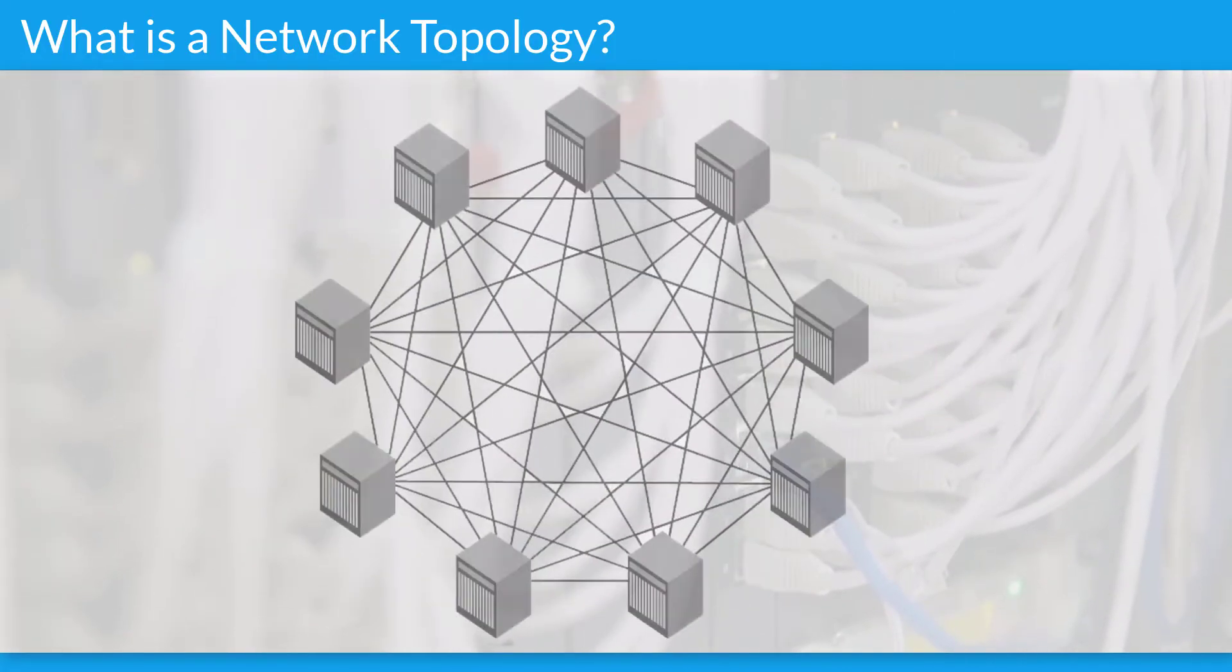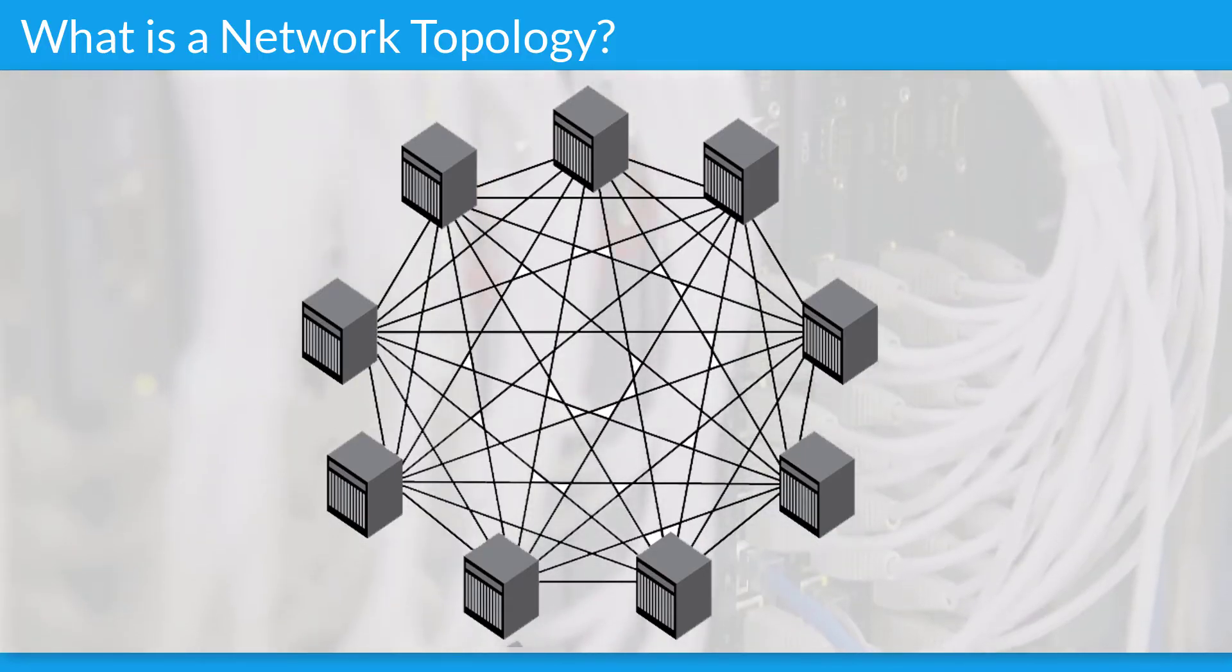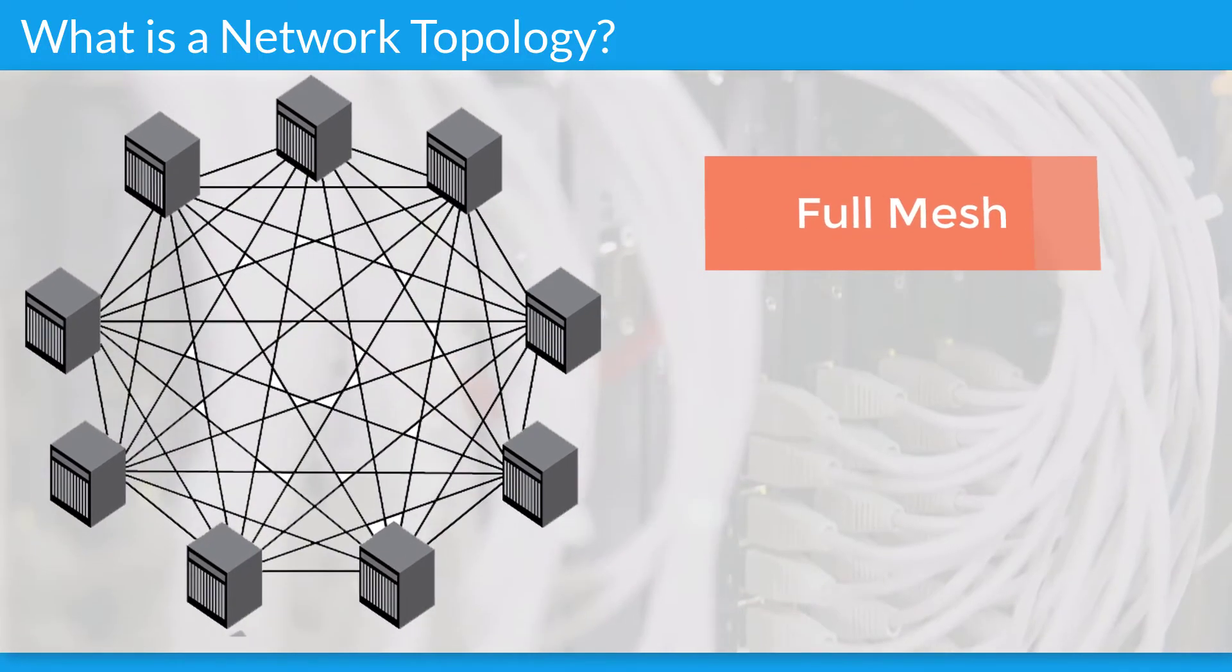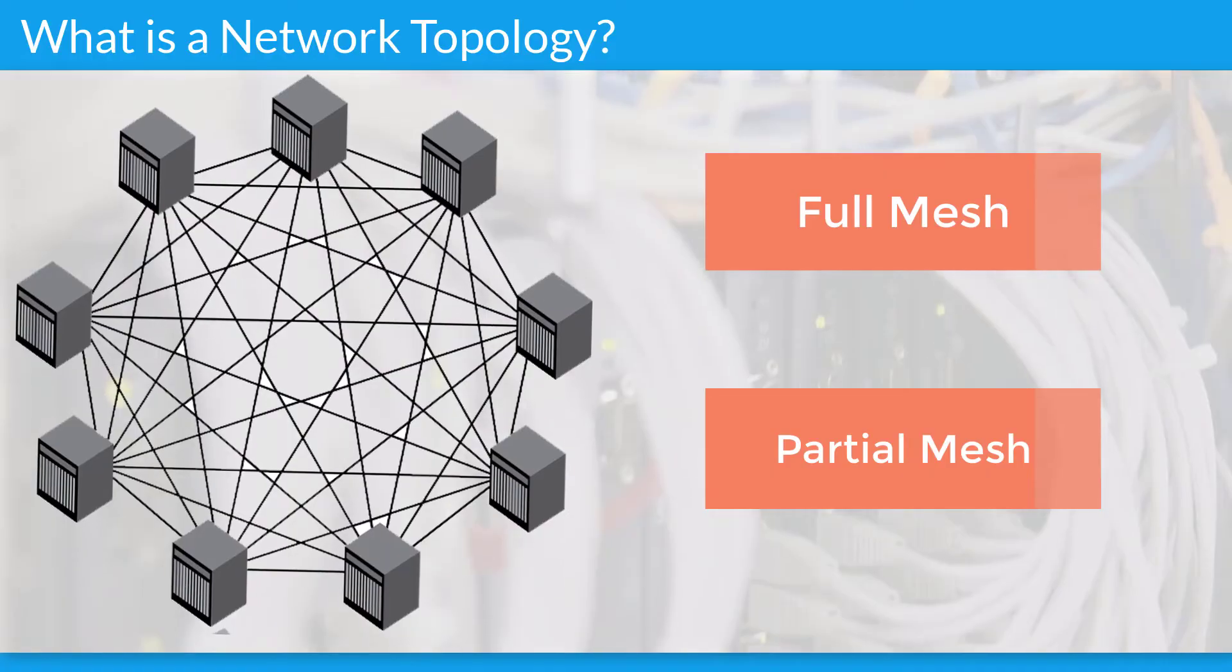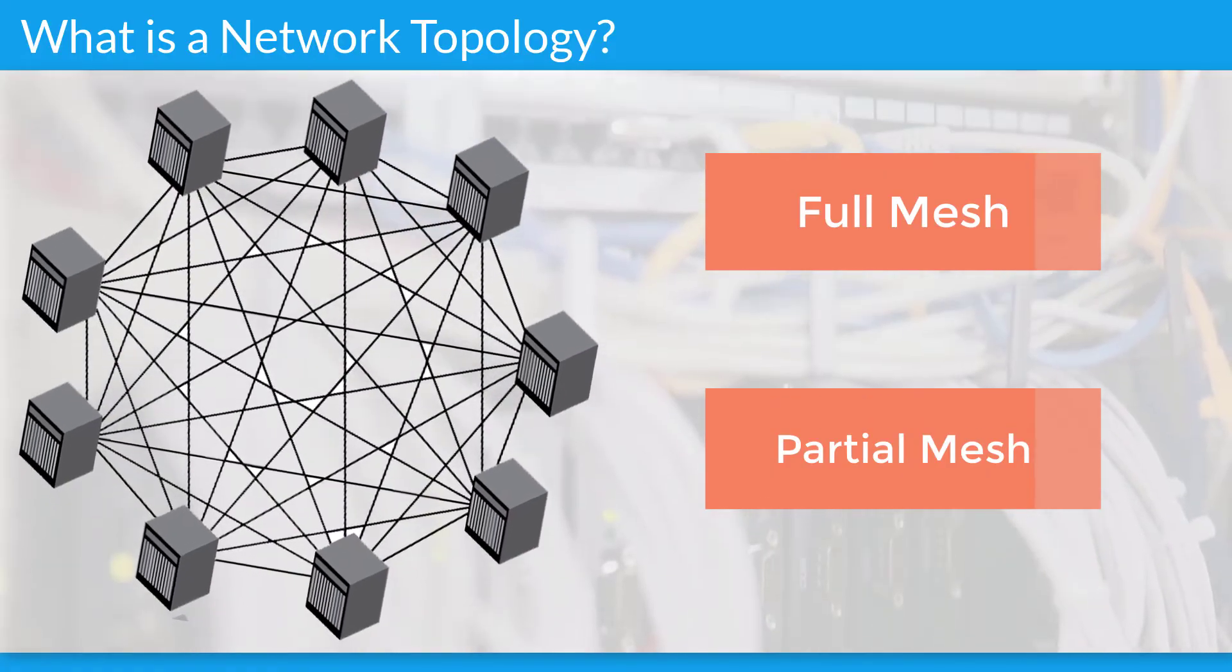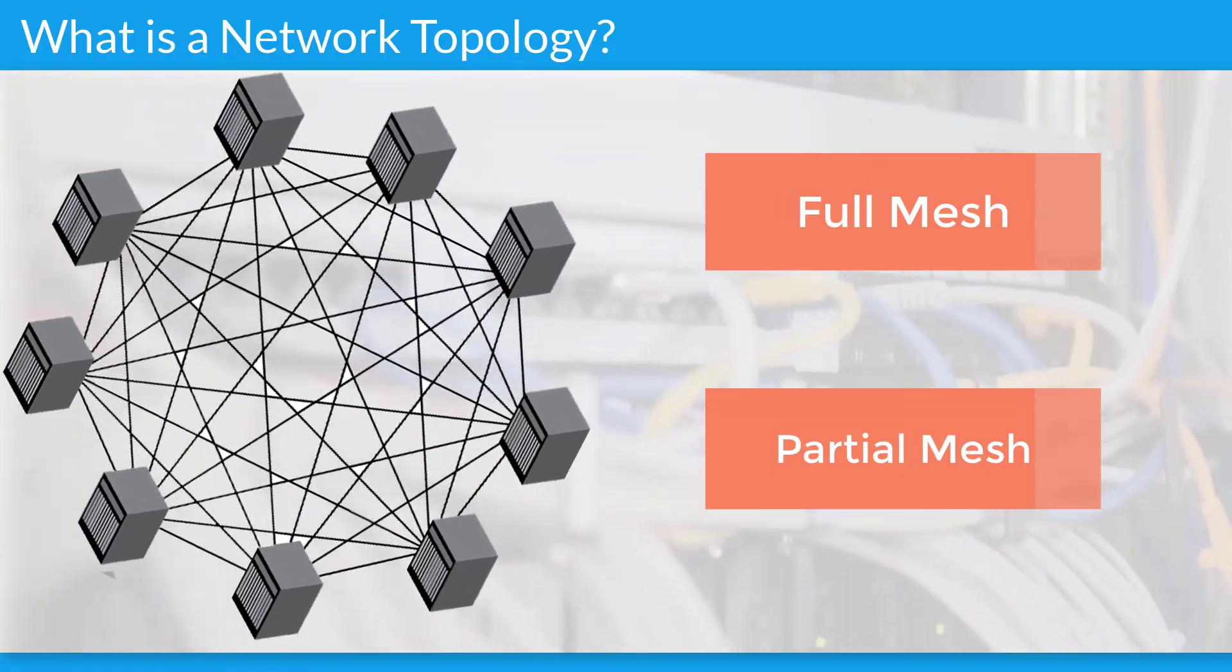Mesh Network Topology: The mesh network topology employs either of two schemes called Full Mesh and Partial Mesh. In the Full Mesh Topology, each workstation is connected directly to each of the others.